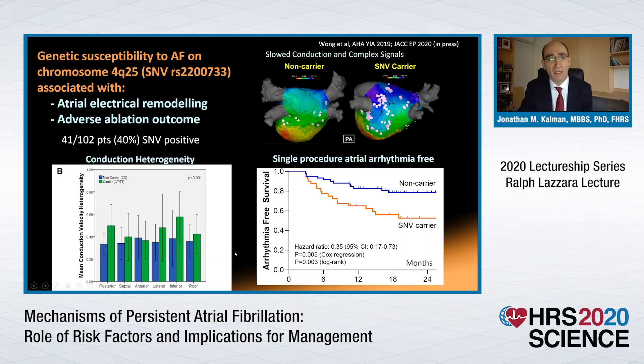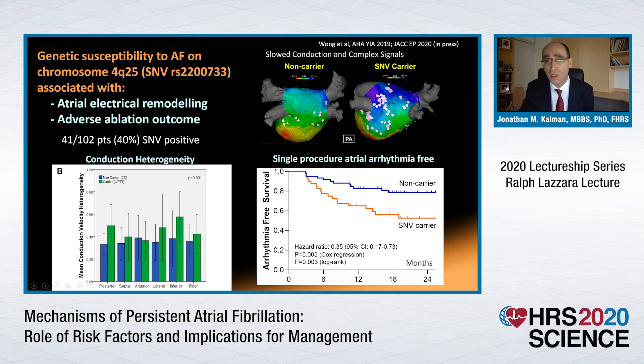In addition to this list, we can now add genetic predisposition. We know that the single nucleotide variant on the 4Q25 gene is the one most associated with increased risk of AF and worse AF outcomes. From work recently in press from Jeff Wong in our group, we see that variant associates with conduction heterogeneity, with regions of conduction slowing in the posterior left atrium, complex signals, and this is the mechanism underlying impaired single-procedure atrial arrhythmia freedom.